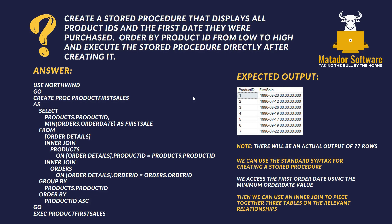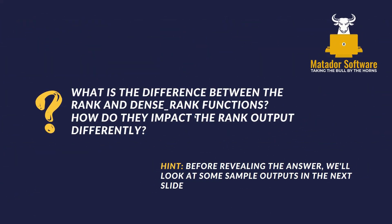Here's the answer. We've got the standard syntax to create a stored procedure: USE, GO, CREATE PROCEDURE, name it, AS, and then at the end EXEC to execute the name of our stored procedure. We needed the MIN aggregation to get the earliest order date, and then we join products onto the order details on the product ID fields to piece together the first sale and the product ID.